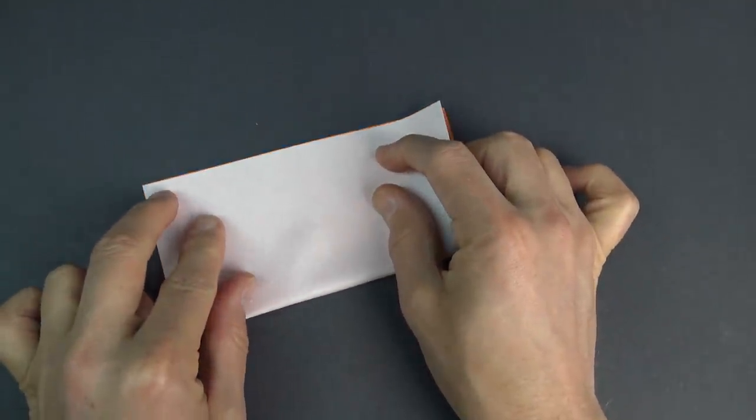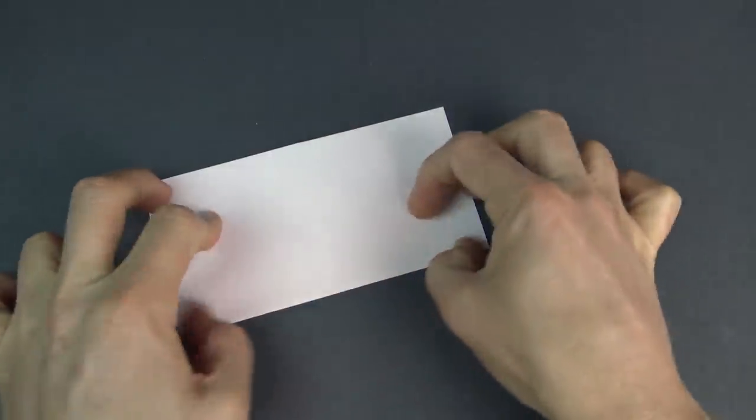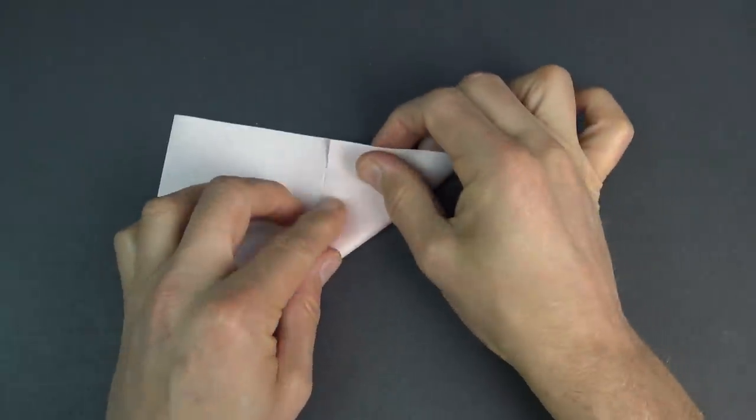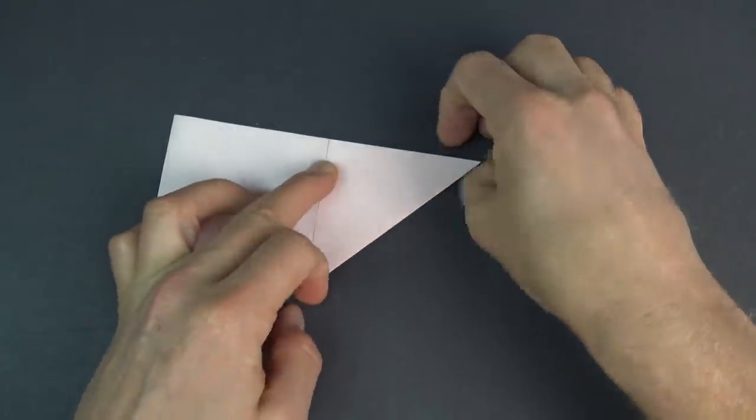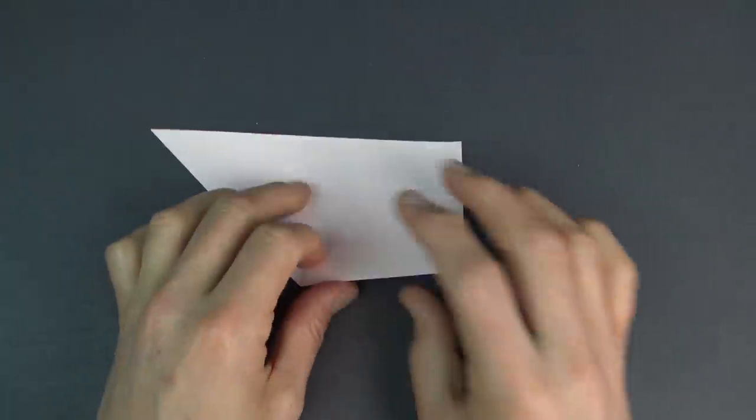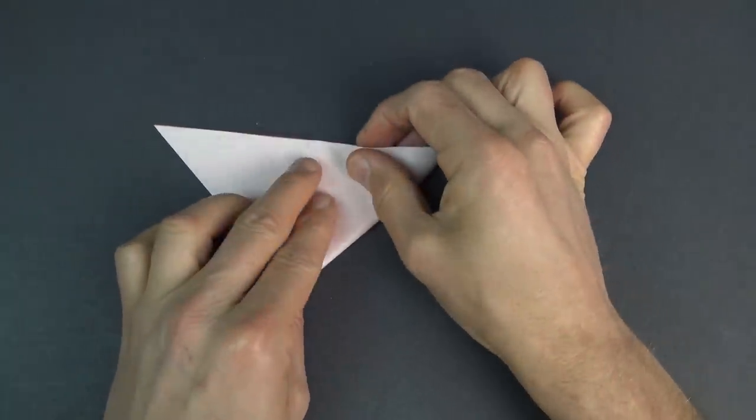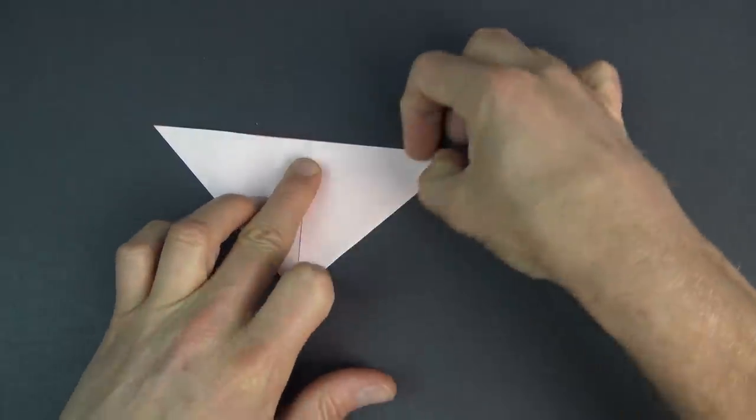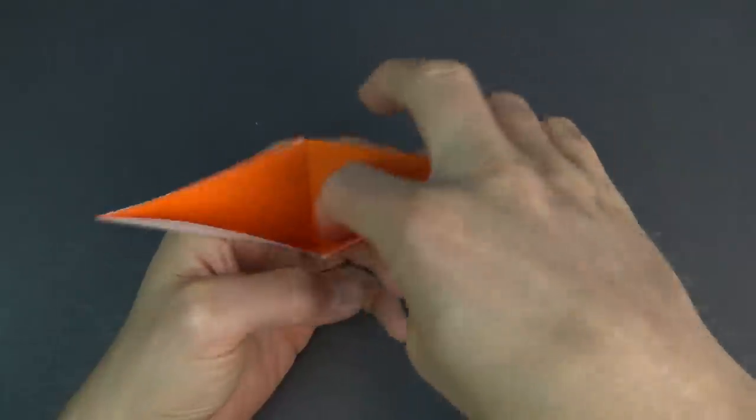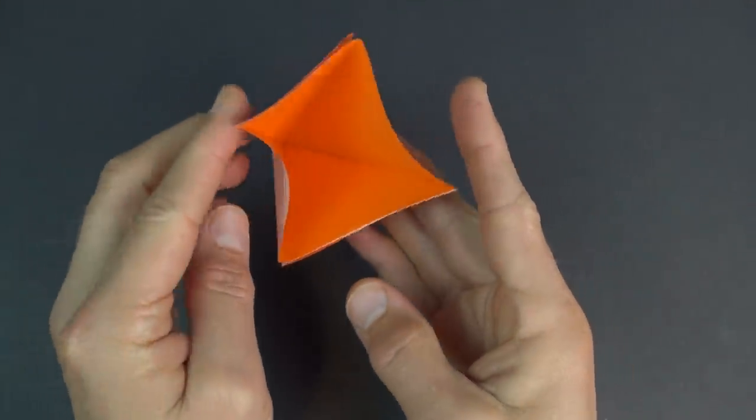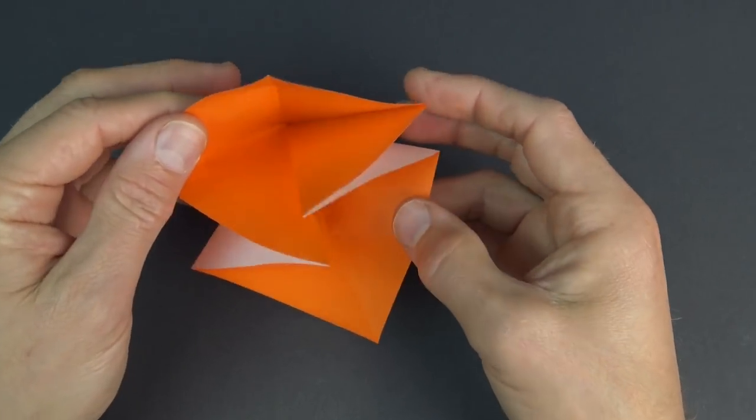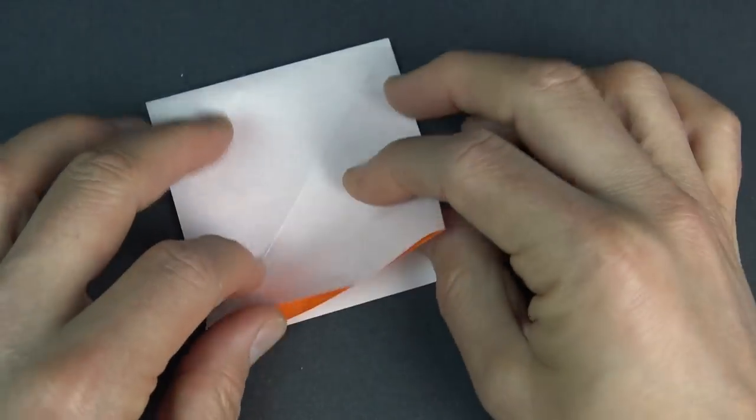So we're making a square base. Fold this corner to here and turn over and fold this corner to here. And now open the pocket, put your finger inside and push the two sides together and flatten. So here we have this square base with the open side facing us.